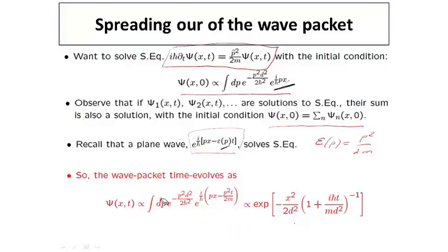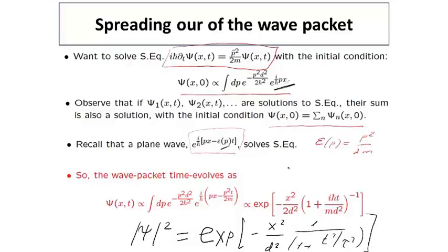So this absolute value squared can be calculated. Again, we don't worry too much about the overall coefficients. We only look at what appears in the exponential. So we can write this density as an exponential, basically from here, minus x squared over d squared. But there is also another term, which is 1 over 1 plus t squared over tau squared. And tau here is exactly the time scale we discussed in the beginning, which is mass times the localization length in some sense, d squared divided by h bar. So this completes the derivation of the main result that we discussed earlier, and also completes the first lecture. Thank you very much and I will see you in class later in the week.